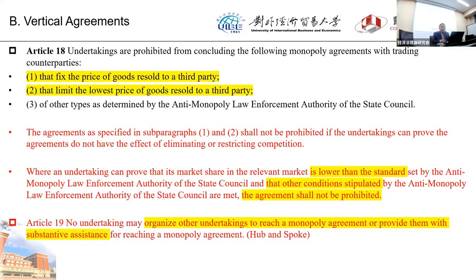There is also a new hub-and-spoke provision, previously missing in the old law. Article 19 stipulates that no undertaking may organize other undertakings to reach a monopoly agreement or provide them with substantial assistance for reaching a monopoly agreement. This is very important because in the old Chinese law, monopolistic agreements were divided into two categories — one dealing only with agreements between competitors, and one only dealing with trading counterparts — leaving no basis for imposing liability on the hub undertaking in hub-and-spoke conspiracies.